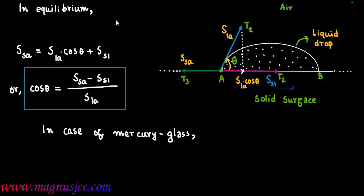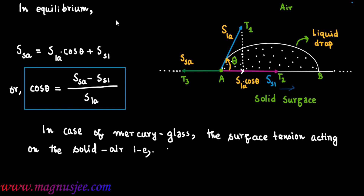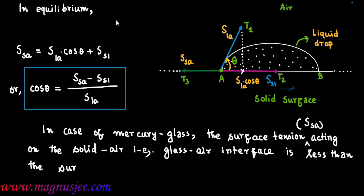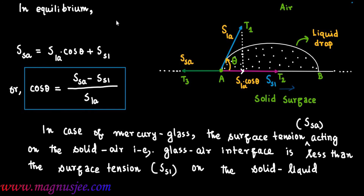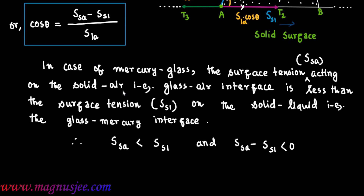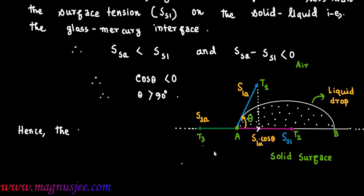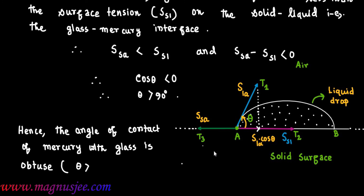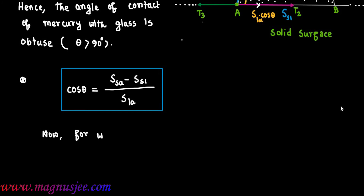In the case of mercury-glass, the surface tension acting on the solid-air (glass-air) interface SSA is less than the surface tension acting on the solid-liquid (glass-mercury) interface SSL. Therefore SSA − SSL is less than 0, so cos theta is less than 0, meaning it is negative. Therefore theta is greater than 90 degrees — the angle of contact is obtuse.